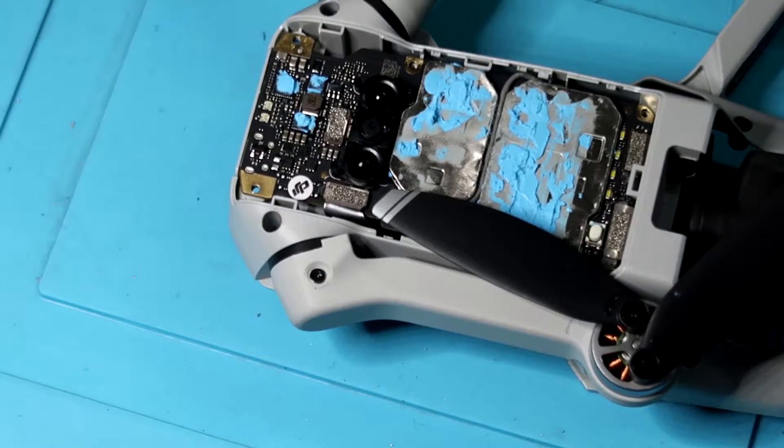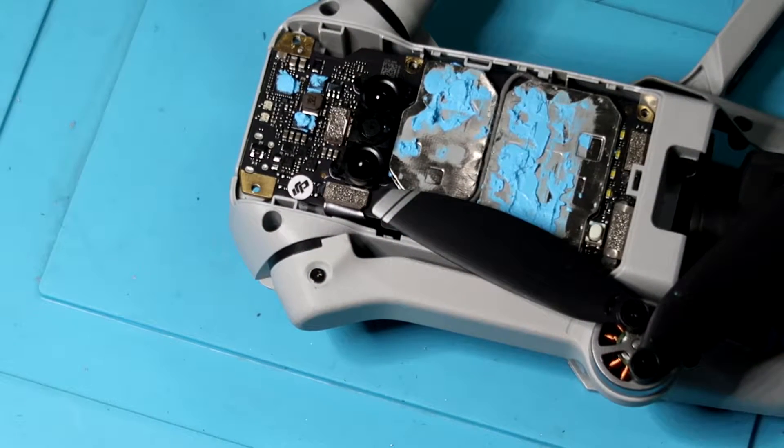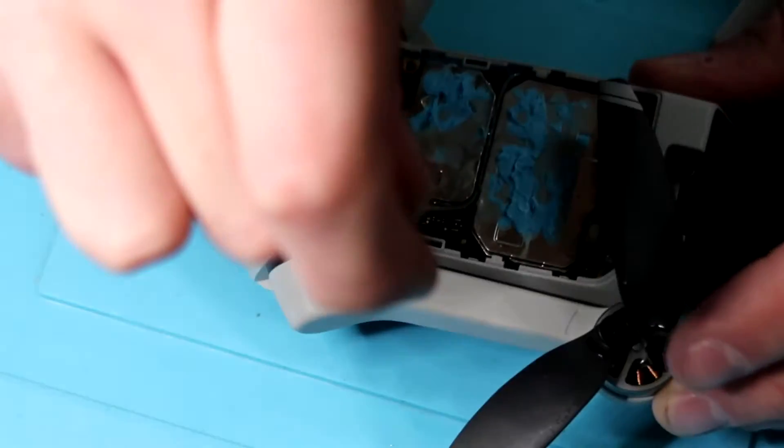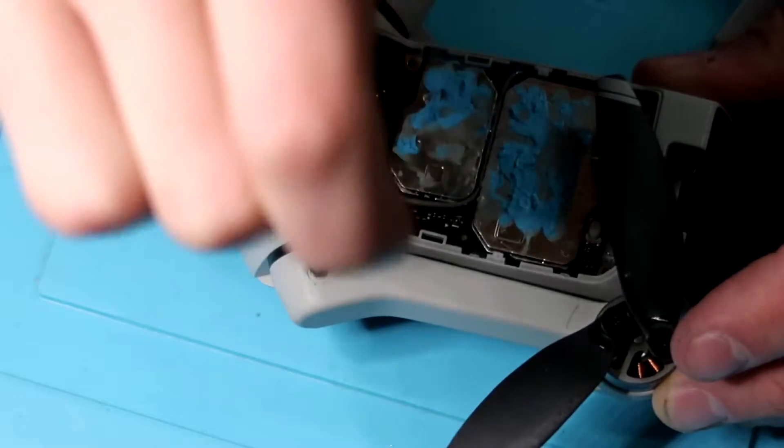So now that you have all that removed, we can go ahead and actually take that arm out of the drone. So let's move on to the rear arm. The rear arm's a little bit simpler. There's only two screws locking it to the frame, one on the top of the arm and one on the bottom.